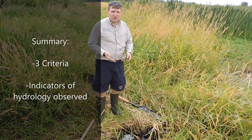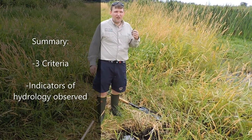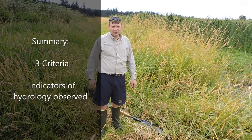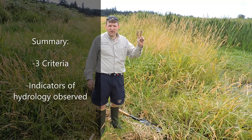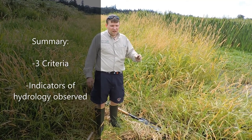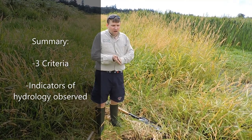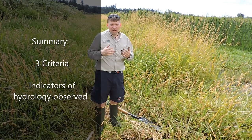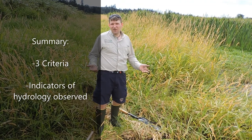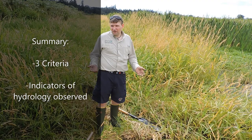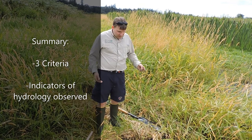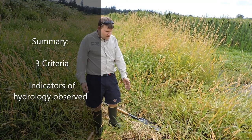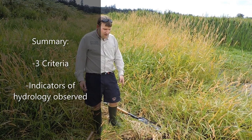I also mentioned algal mats or algal crust, and aquatic invertebrates — around here usually freshwater snails. To summarize: the three criteria for wetlands according to the Army Corps of Engineers are hydrology, hydrophytic vegetation, and hydric soils. We look for indicators of hydrology rather than directly observing water all growing season. The indicators we observed here are surface water, soil saturation, and high water table.